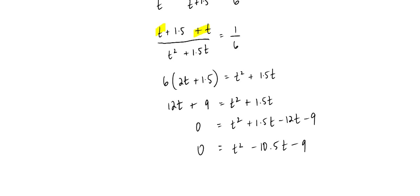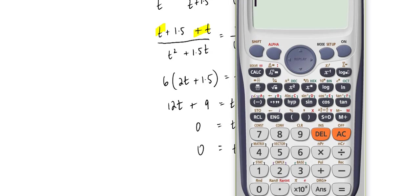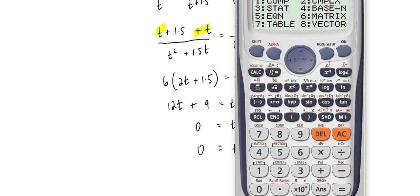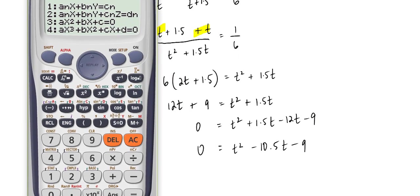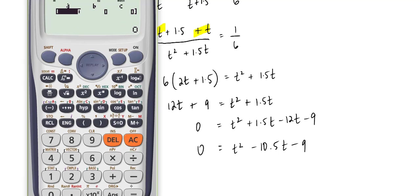To solve this, we need to use the quadratic formula, but there's always an easier way. The easier way would be to use a calculator. We click Mode, Equation, and pick number 3. We substitute our values for A, B, and C: A being 1, B being negative 10.5, and C being negative 9.